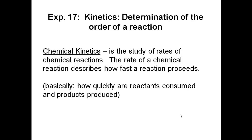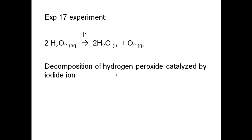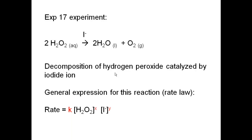Whether we look at it in terms of reactants being consumed or products being produced, it's still the same rate. In this experiment, we're looking at the decomposition of hydrogen peroxide catalyzed by iodine ion. The general rate law expression is: rate = k[H₂O₂]^x[I⁻]^y. Our goal today is to find k, x, and y.